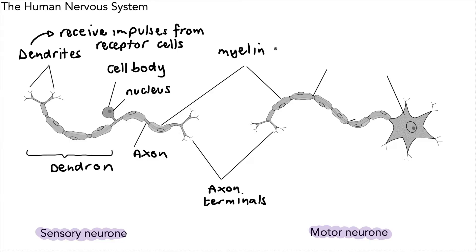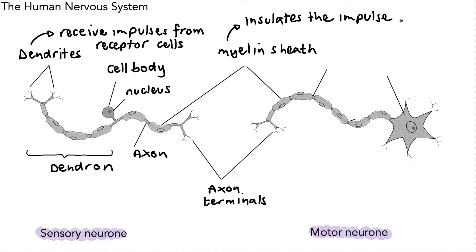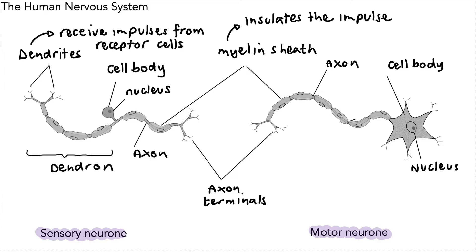This structure is the myelin sheath. It's a slightly fatty layer that insulates the axon and the neuron, and it also makes the impulse travel much faster. The axon is just underneath the myelin sheath. Right at the end there we have the cell body of the motor neuron with its nucleus inside. You should be able to label these parts and tell the difference in structure between these two types of neuron.